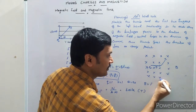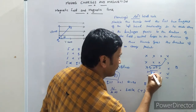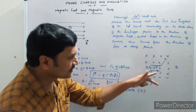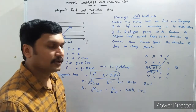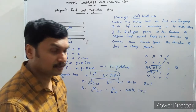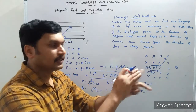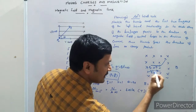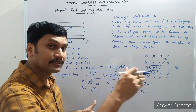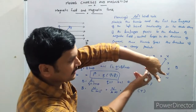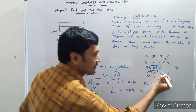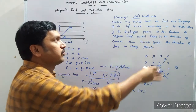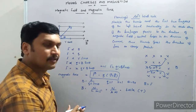Now suppose we have a negative charge moving in the same direction with velocity V in the same magnetic field. Apply Fleming's left hand rule: forefinger in the direction of magnetic field, but the middle finger points opposite to the direction of motion since the current is opposite for a negative charge. The thumb then points in the downward direction. So the negative charge experiences a force downward and deviates from its actual path in the downward direction.